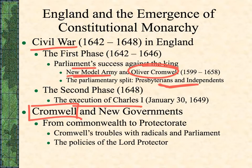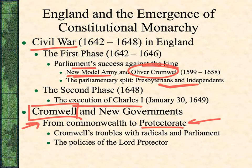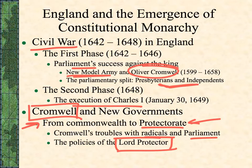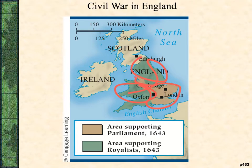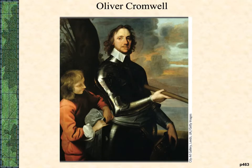With no king, Cromwell takes over and tries to rule through Parliament. This transitions from a Commonwealth — where Parliament rules — to a Protectorate, as they realize you need one person in charge. Because radicals and Parliament are arguing over everything, Cromwell gets himself named Lord Protector and pretty much becomes a king. During the Civil War, some areas supported Parliament and others the Royalists, as you can see on the map.